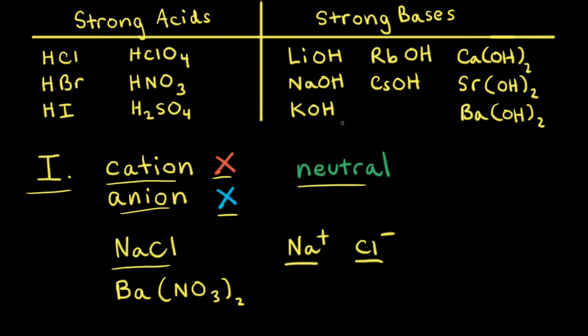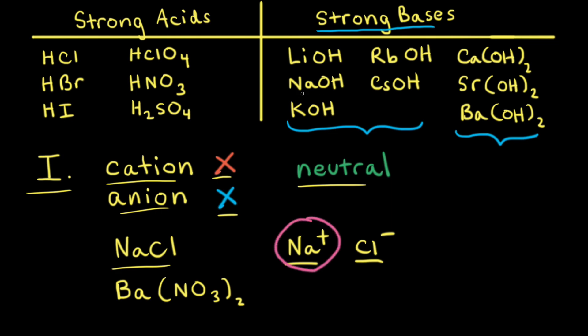To determine whether or not a cation will react with water, it's helpful to think about a list of common strong bases that consists of group 1A metal hydroxides and the heavier group 2A metal hydroxides. If the cation is from group 1A or the heavier group 2A, the cation will not react with water. For example, in our case, we have the sodium cation, and since the sodium cation is in group 1A, the sodium cation will not react with water.